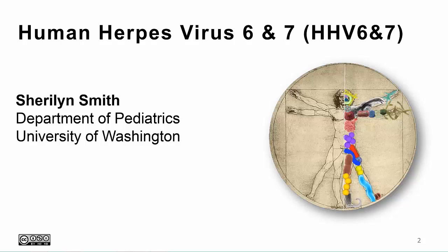Hello, this is Sherilyn Smith from the University of Washington. I'm a pediatric infectious disease doctor, and we're going to be talking about two viruses of the herpesvirus family that can cause common illnesses in children and even more severe disease in immunocompromised patients: human herpesvirus 6 and 7, or HHV6 and HHV7.